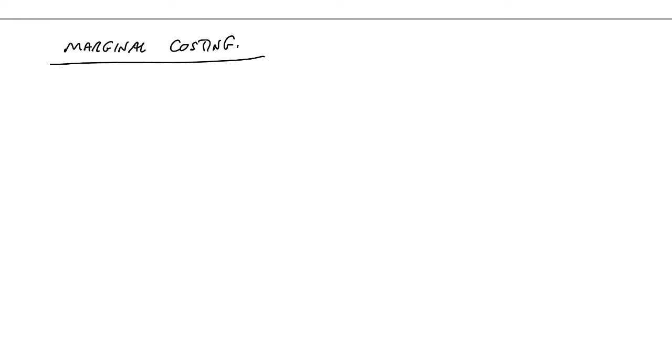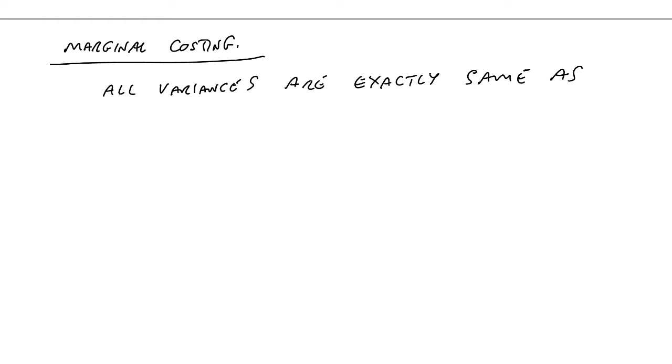I hope you've listened to the previous ones, because in all the previous ones we were looking at the example of absorption costing. This time, what's the effect of marginal costing? And as I said, this will be short, because there's very little difference in what we've done. All the variances are exactly the same as for absorption costing, so I'm not going to waste time going through them all again, except for two.